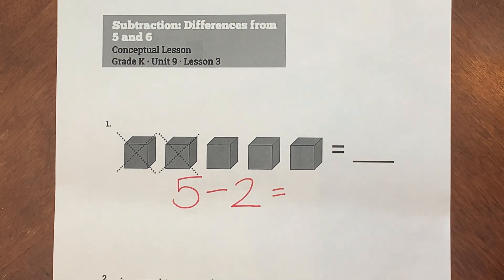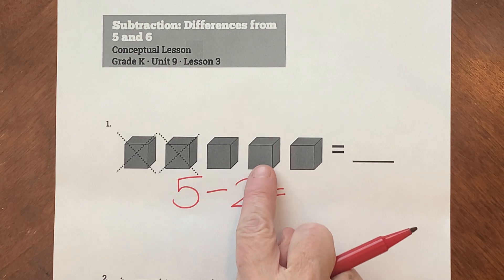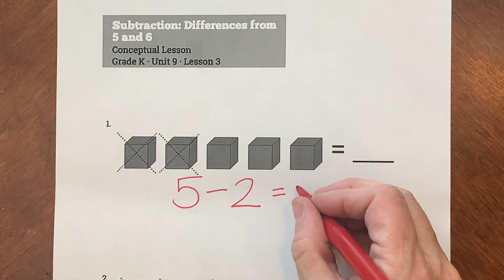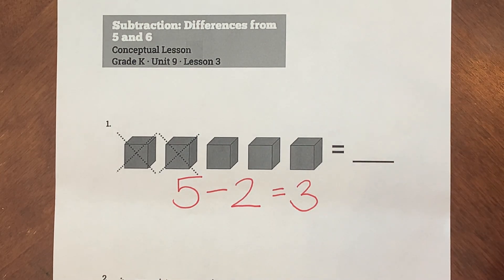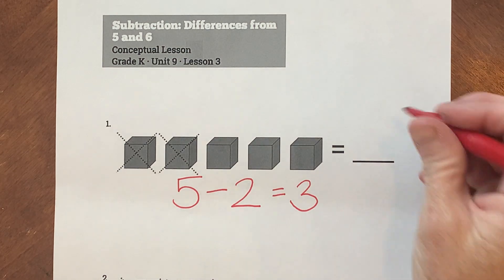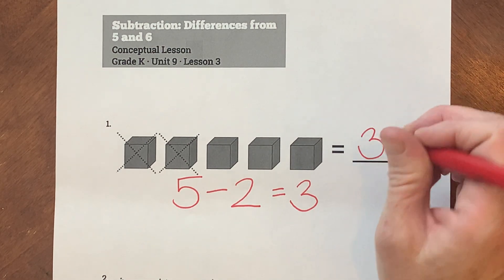And then if we take away 2 blocks, how many blocks are left? 1, 2, 3. So our answer or our difference is 3. So 5 blocks subtract 2 blocks equals 3 blocks, and we can put our answer up there too, boys and girls.